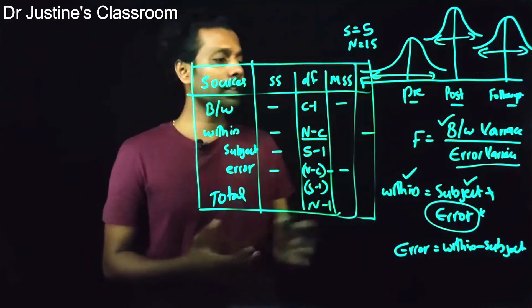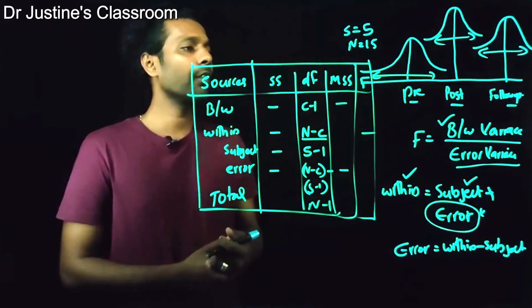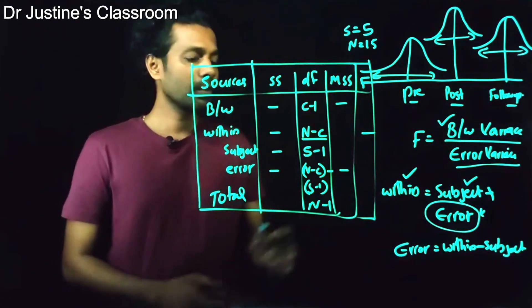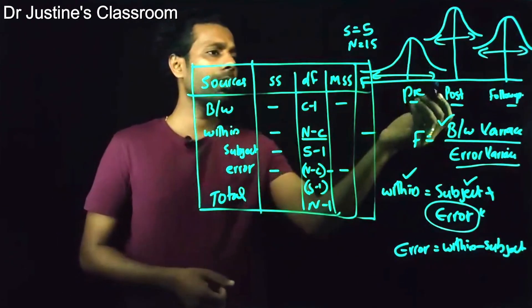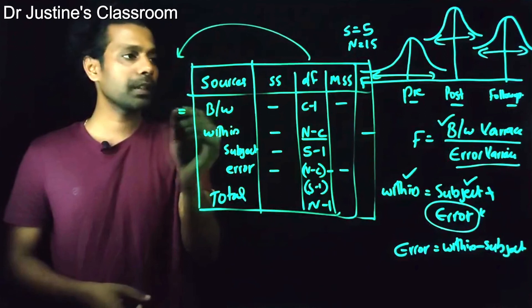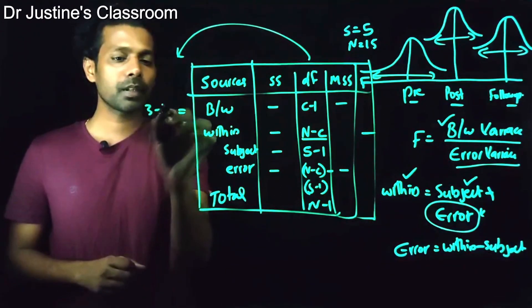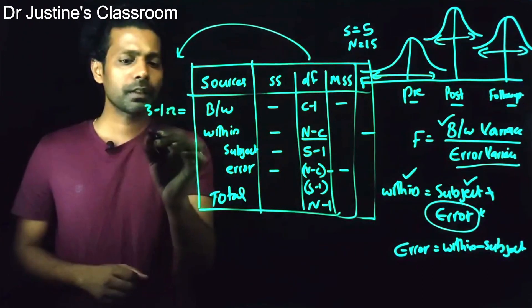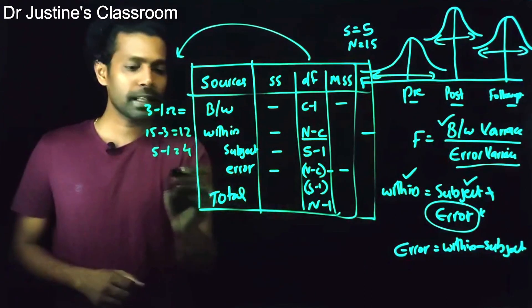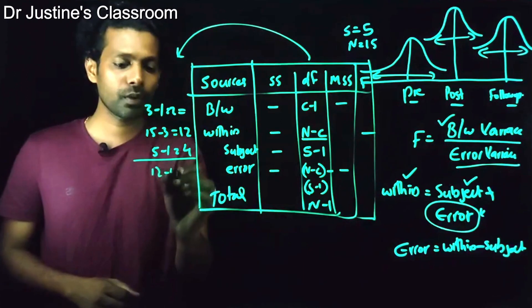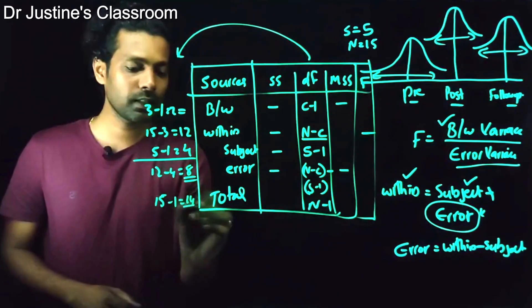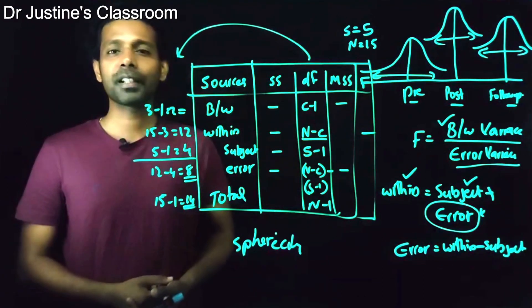This is how we calculate degree of freedom for a one-factor repeated measures ANOVA. For example, with 5 participants and 3 levels: between df = 3 − 1 = 2; within df = 15 − 3 = 12; subject df = 5 − 1 = 4; error df = 12 − 4 = 8; total df = 15 − 1 = 14. That covers the basics. We'll see you in the next class.